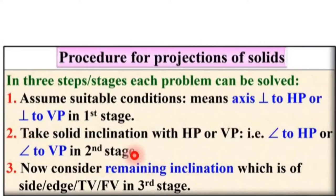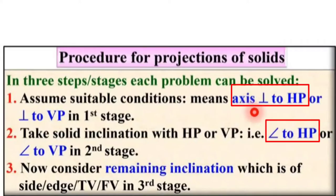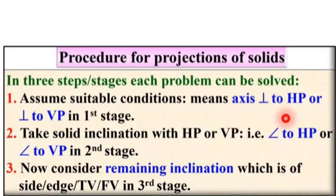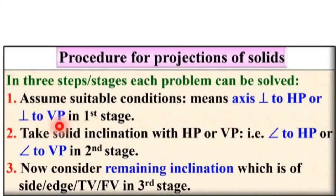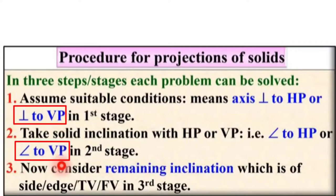In Stage 2, you have to assume the axis is either inclined to HP or inclined to VP. Keep in mind: if in Stage 1 you assumed the axis is perpendicular to HP, then in Stage 2 it must be inclined to HP. Similarly, if in Stage 1 the axis is perpendicular to VP, then in Stage 2 it must be inclined to VP.